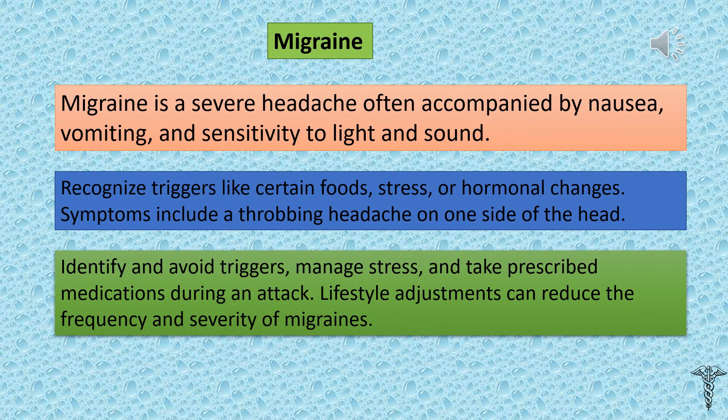Migraine is a severe headache often accompanied by nausea, vomiting, and sensitivity to light and sound. Recognize triggers like certain foods, stress, or hormonal changes. Symptoms include a throbbing headache on one side of the head. For prevention, identify and avoid triggers, manage stress, and take prescribed medications during an attack. Lifestyle adjustments can reduce the frequency and severity of migraines.